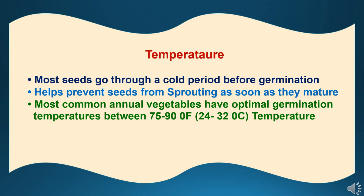Temperature is another factor. Most seeds should go through a cold period before germination. Temperature helps prevent seeds from sprouting as soon as they mature. Most common annual vegetables have optimal germination temperatures between 75 to 90 degrees Fahrenheit, or 24 to 32 degrees centigrade. A good combination of moisture and temperature results in good germination.